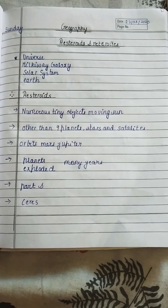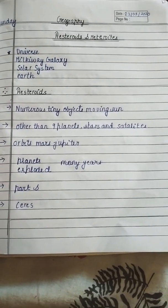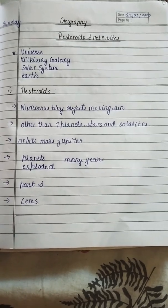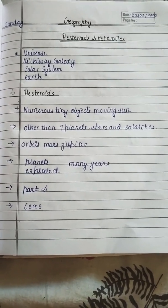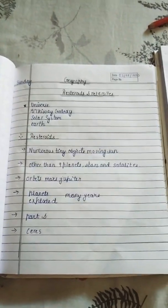Asteroids, numerous tiny objects moving around the sun other than planets, stars and satellites. Their orbits are between Mars and Jupiter. These are planets exploded many years ago into parts. So here we go to another topic.